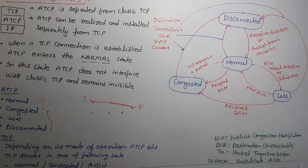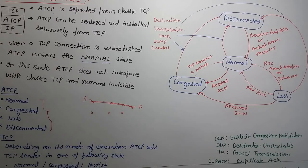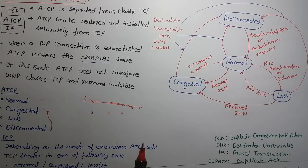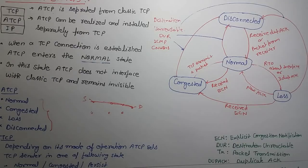In this way ATCP works. ATCP acts as an observer for TCP. It checks the TCP connection and then changes the mode accordingly. Depending upon its modes of operation, ATCP sets the TCP sender in one of the following states: normal, congested, and persist state. Persist state means when ATCP encounters 3 duplicate acknowledgements, it does not forward those 3 duplicate acknowledgements to the TCP layer, but instead puts TCP into persist state.